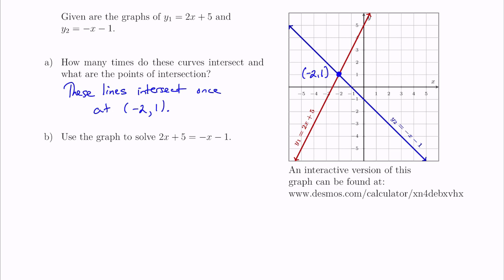In part b, we will use the graph to solve the equation 2x plus 5 equals negative x minus 1. When we recognize that the left side of the equation, 2x plus 5, is exactly the same as the line y1, and the right side, negative x minus 1, is exactly the same as the line y2, we need to find the point of intersection. The equation we are solving only has an x value — there are no y's. The y values are subtly hidden behind the y1 and y2 in the equation, so the solution will be exactly the x coordinate from the point of intersection.